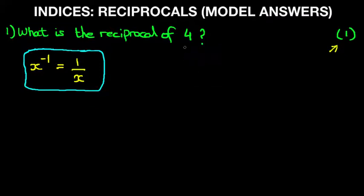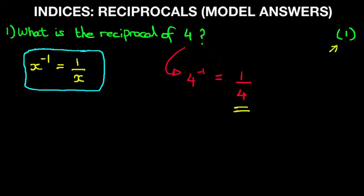Therefore, the reciprocal of 4, which means 4 to the power of minus 1, equals 1 over 4. And that is our answer. The reciprocal of 4 is 1 quarter.